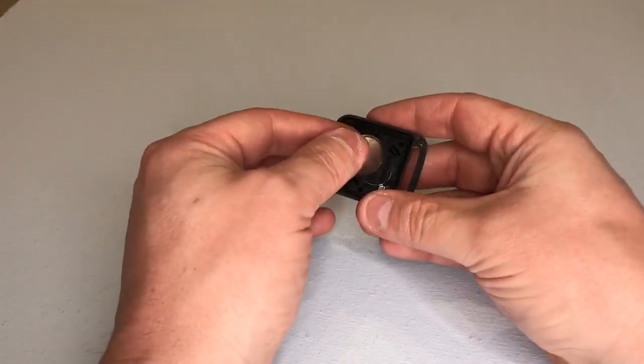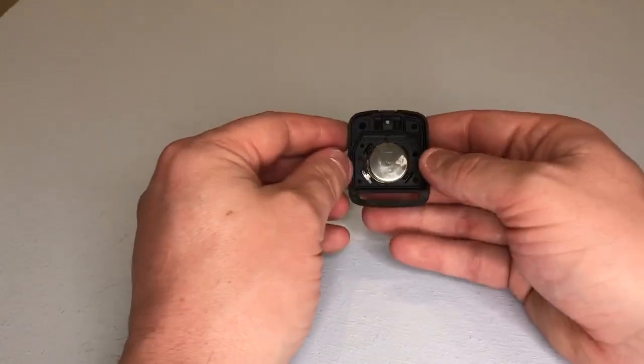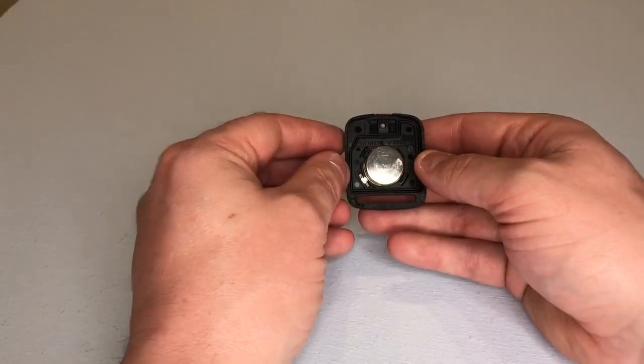We just pop it back into the housing making sure that the writing on the key fob battery is facing downwards. So we know it's in its correct location.